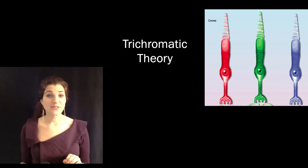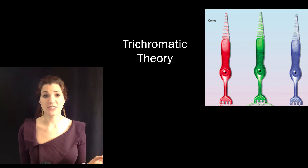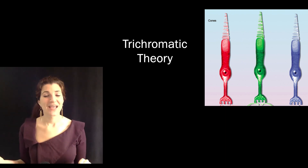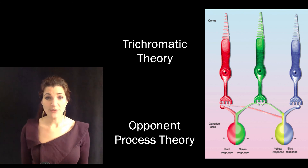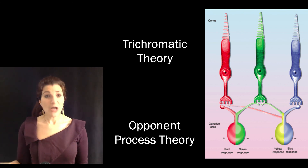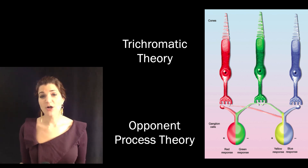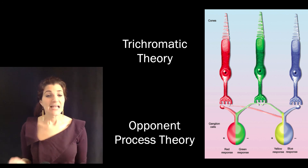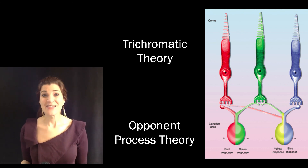Heading into class, here's what you should have a good handle on. Trichromatic theory describes the process by which three types of cones code for all of the wavelengths along the visible spectrum. Opponent process theory describes how retinal ganglion cells interpret the output from the cones via a red-green circuit and a yellow-blue circuit, as well as a circuit for brightness. Trichromatic theory and opponent process theory are not competing theories — they describe different parts of the same process. In class, we're going to talk more about why the visual system is arranged in this particular configuration and practice working with opponent colors.